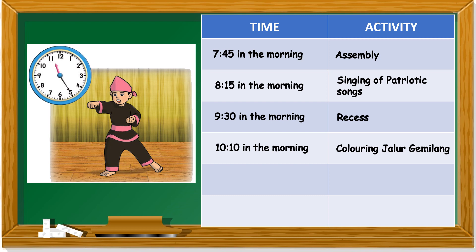Next activity — let's look at the time first. The hour hand points just after eleven. The minute hand points to five. Five times five is 25. So it's 11:25 in the morning. What is he doing? He's doing a silat performance — or you can just write silat.